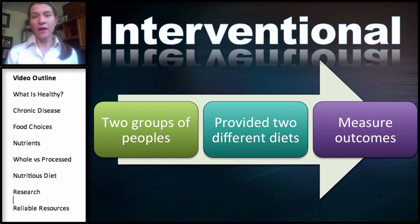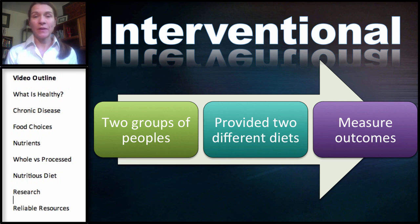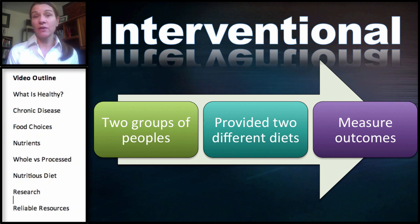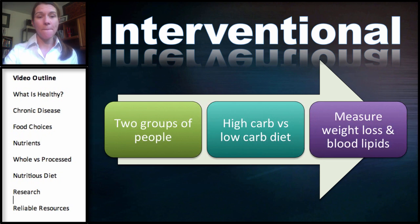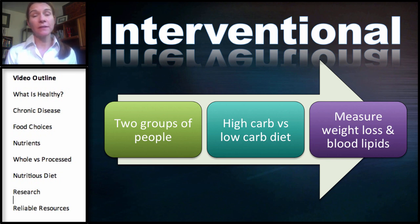An interventional trial is when investigators intervene — for example, taking two groups of people and providing them with two different diets and then measuring the outcome. This is an intervention, as opposed to simply looking for associations as in an epidemiologic study or making observations with an individual or small group. For instance, one group placed on a high-carb diet and one group on a low-carbohydrate diet, then measuring weight loss and blood lipids after a period of time.